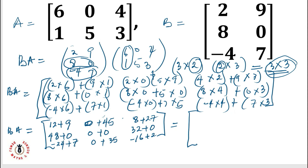Summing everything up, my final B·A matrix is: 21, 45, 35 in the first row; 48, 0, 32 in the second row; and minus 17, 35, minus 14 in the third row.